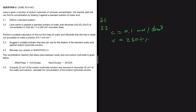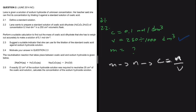We divide the volume by 1000 so the unit becomes decimetre cubed. What we're looking for is the mass to achieve a concentration of 0.1 mol/dm³. You can use mass to calculate moles, then say concentration equals moles divided by volume — or equivalently, concentration equals mass divided by molar mass multiplied by volume.